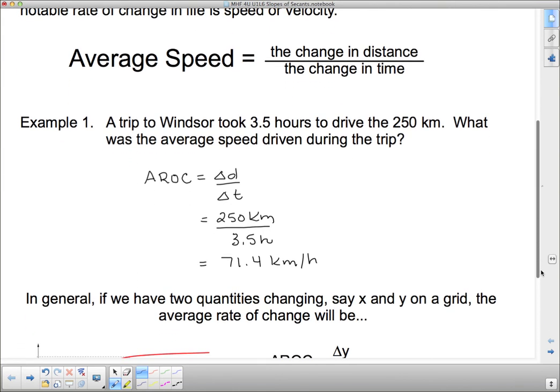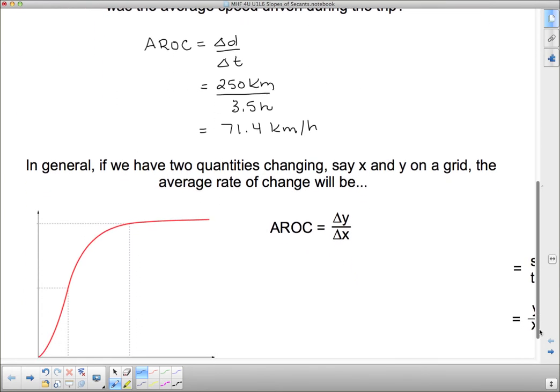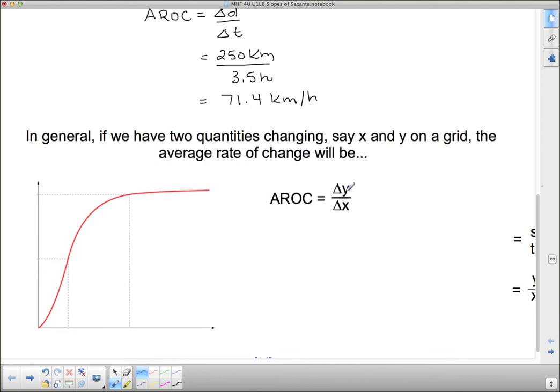So in general, if we have two quantities changing, say x and y on a grid, the average rate of change will be the change in y over the change in x. In this case, if we were going to graph a distance time graph, the y would be distance and the x would be time. Now, since we're doing this in general, I'm not talking about distance and time. I'm simply talking about this graph where this is the x, this is the y. And what we're doing is we're finding the distance between them. I don't care what goes on in between. All I care about is how much the x changed and how much the y changed.